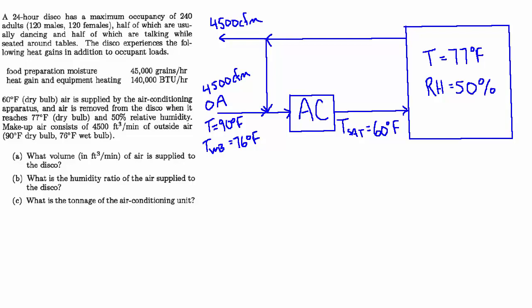The disco experiences the following heat gains in addition to occupant loads: food preparation moisture 45,000 grains per hour, and heat gain and equipment heating 140,000 BTUs per hour. 60 degree dry bulb air is supplied by the air conditioning apparatus, and air is removed from the disco when it reaches 77 degrees and 50% relative humidity.